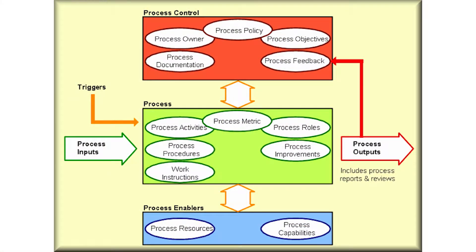Let's take a look at the process diagram found in all of our ITIL publications, first introduced in our ITIL Foundation and also in our Service Strategy publication. This is our process documentation. You will see it is split into three sections: the top section being our process control section, the middle being the actual process itself, and the bottom being the process enablers — which includes resources and capabilities, or in other words, our service assets.